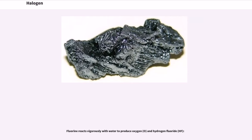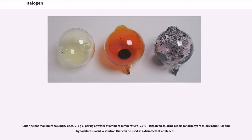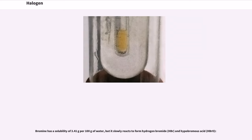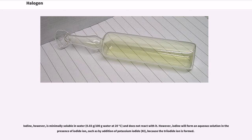Fluorine reacts vigorously with water to produce oxygen (O₂) and hydrogen fluoride (HF). Chlorine has a maximum solubility of approximately 7.1 g Cl per kg of water at ambient temperature (21°C). Dissolved chlorine reacts to form hydrochloric acid (HCl) and hypochlorous acid, a solution that can be used as a disinfectant or bleach. Bromine has a solubility of 3.41 g per 100 g of water, but it slowly reacts to form hydrogen bromide (HBr) and hypobromous acid (BrOH). Iodine, however, is minimally soluble in water (0.03 g/100 g water at 20°C) and does not react with it. However, iodine will form an aqueous solution in the presence of iodide ion, such as by addition of potassium iodide (KI), because the triiodide ion is formed.